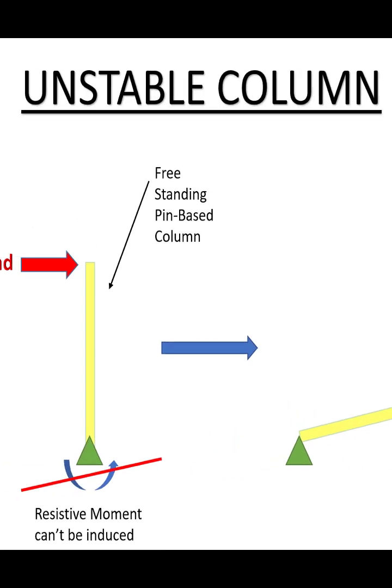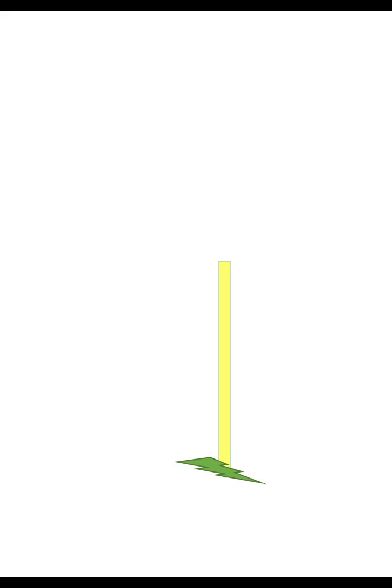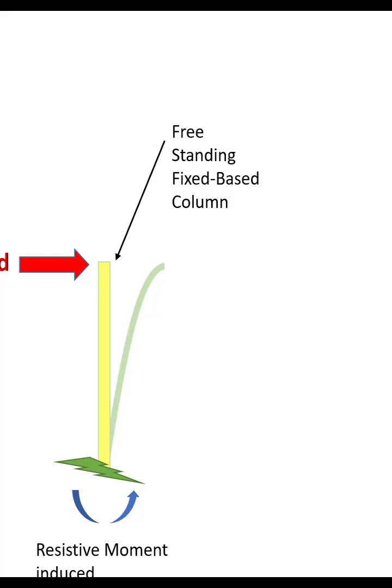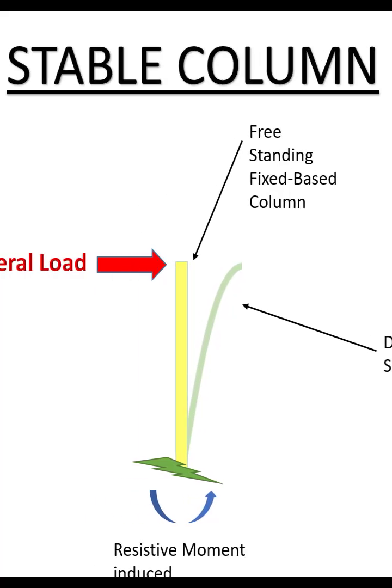On the other hand, let's have a freestanding fixed-base column. If lateral load is applied to its free end, a resistive moment is induced at the base and the column will deflect like this. This is known as a stable column.